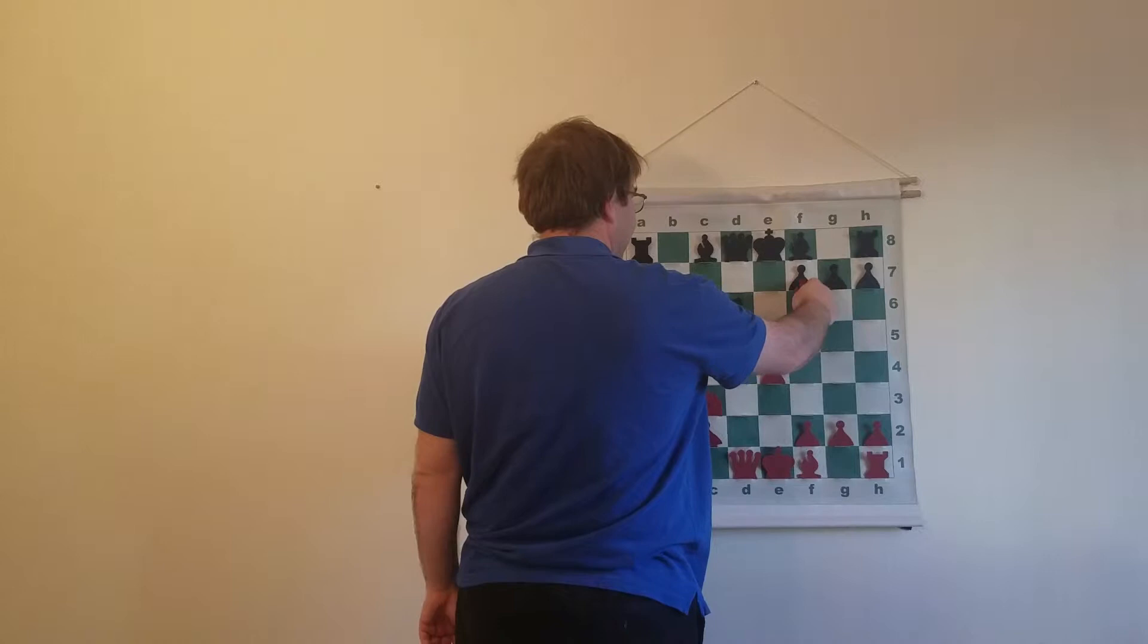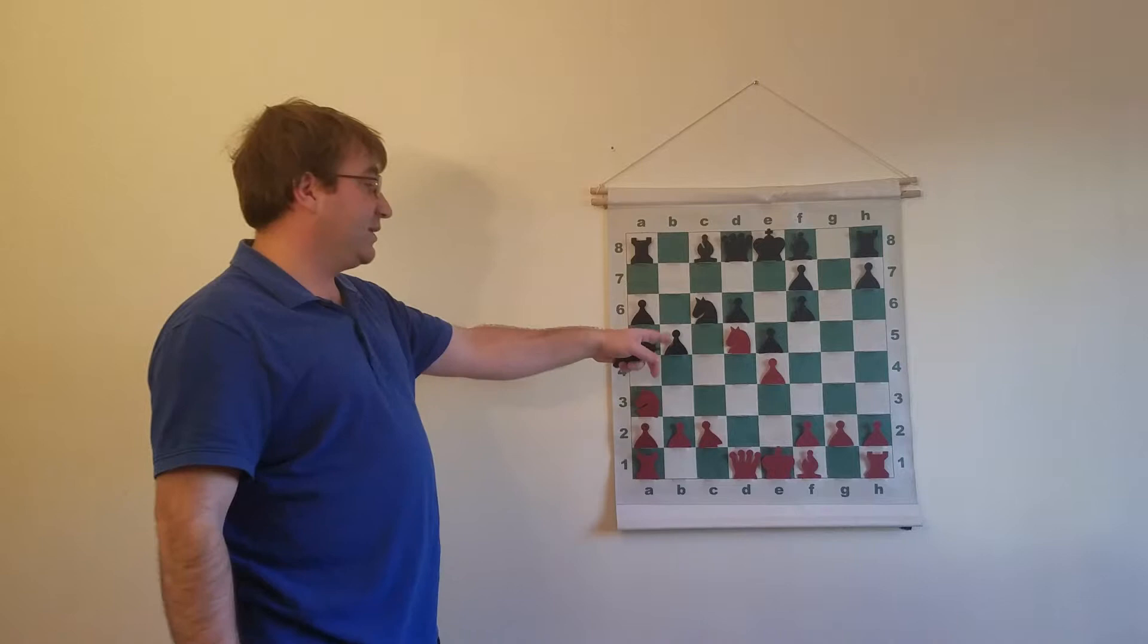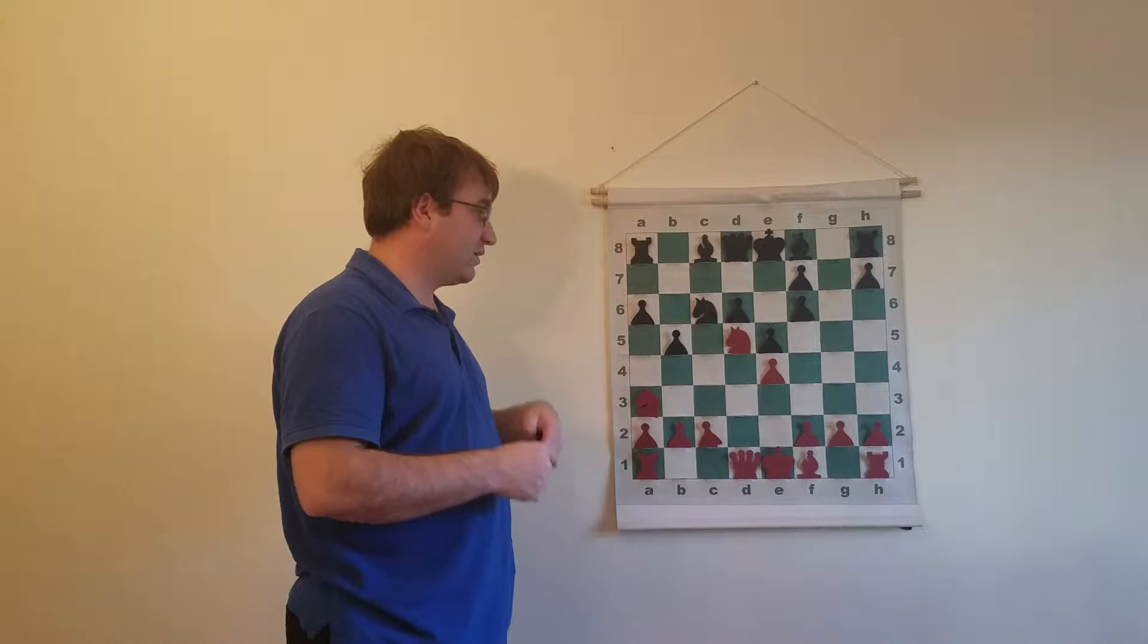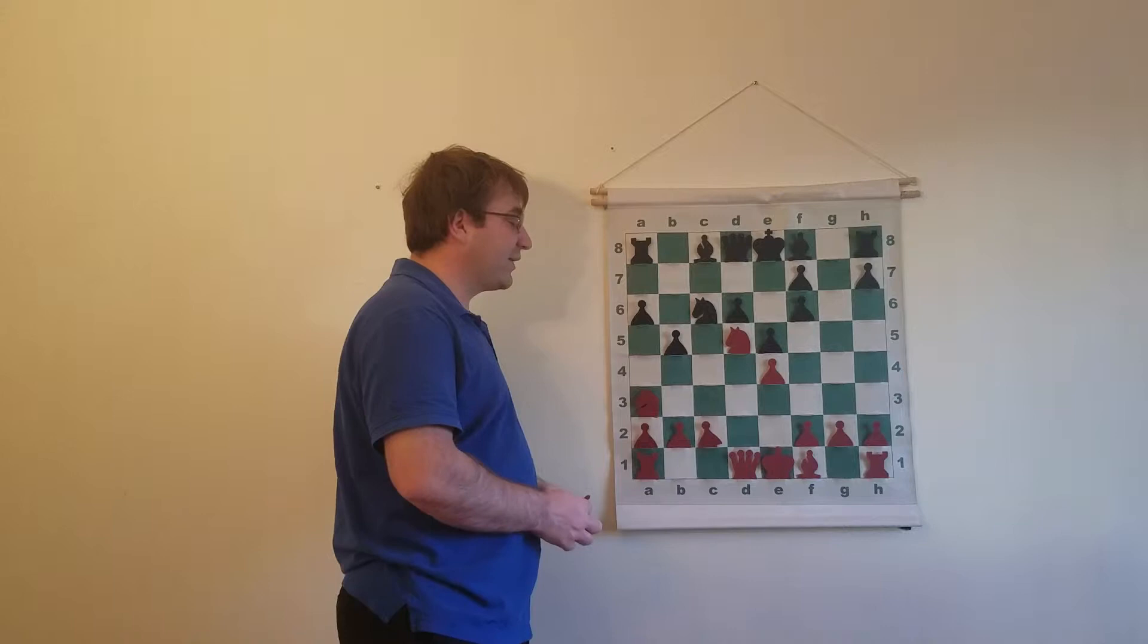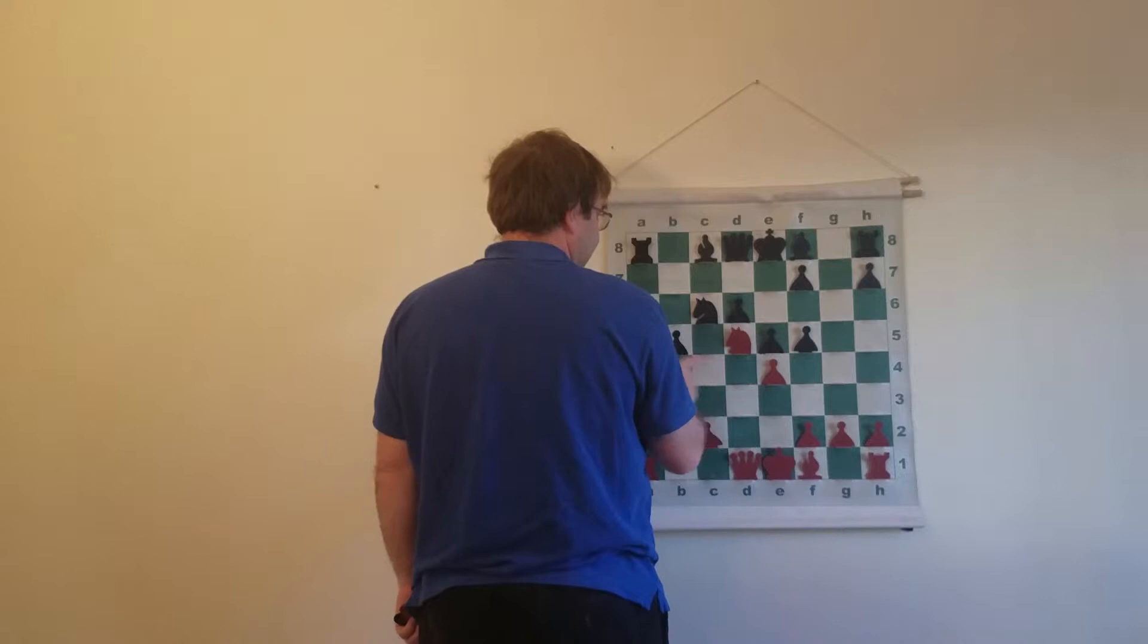Or you can play bishop takes f6 here and double the pawns and g takes f6 and then knight d5. And this is maybe the position that I think a lot of players as white try to get to. This was certainly something that Fischer liked to try to get to. And he really felt like he had the most opportunity to play for a win with white if he could double black's pawns.